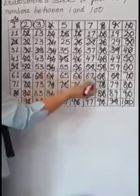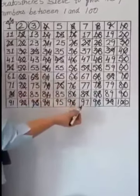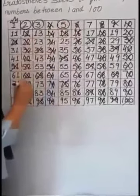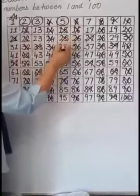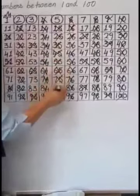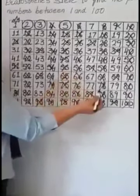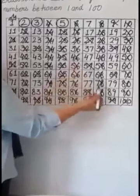Now we will encircle 5 because 5 is a prime number, and we will put a cross on the multiples of 5. We have already cut the multiples of 5.